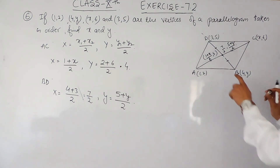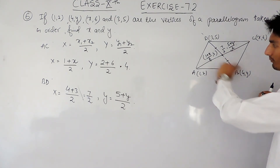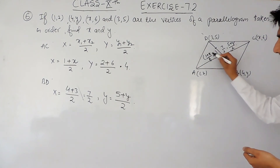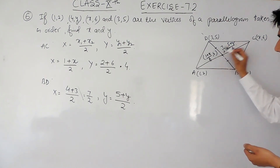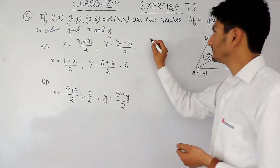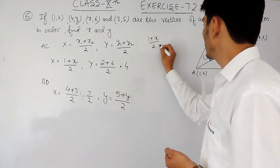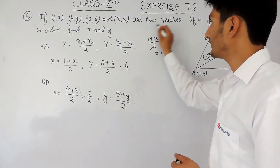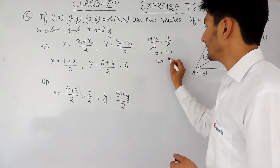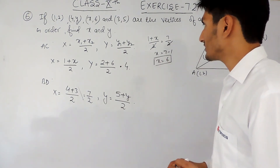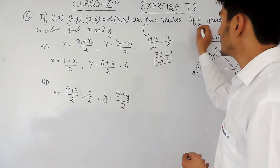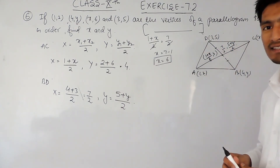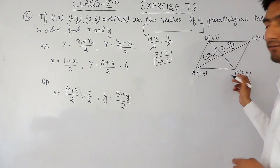Since the diagonals of a parallelogram bisect each other, the midpoint must be the same for both diagonals, so the coordinates of these midpoints must be equal. Equating the x-coordinates: (1 + x) / 2 = 7/2. Cancelling the 2, we get 1 + x = 7, so the value of x is 6.